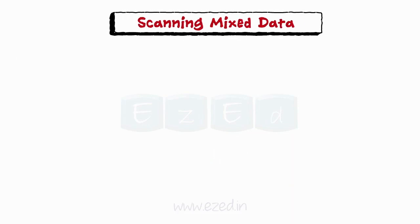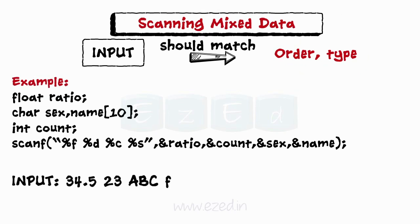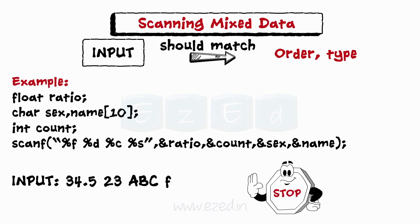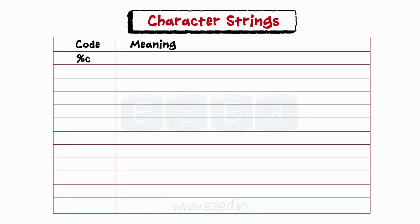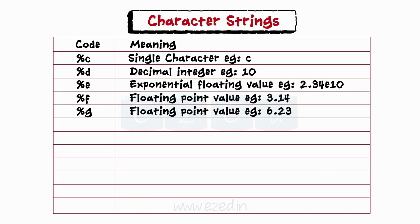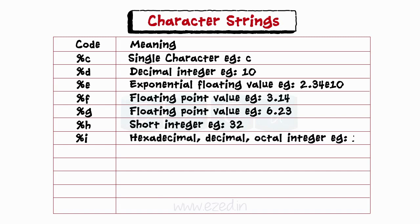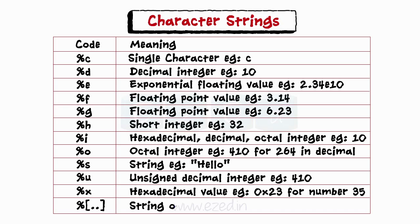We can scan input data of different types in just one scanf statement. In this case, we should exercise care to ensure that the input data items match in order and type with the control specification. If we attempt to read an input that does not match the type expected, then scanf won't read any further and will return the already read values. Let's go through the commonly used scanf format codes: %c reads a character, %d reads an integer, %e reads an exponential value, %f and %g read a floating point value, %h reads a short integer, %i reads hexadecimal, decimal, and octal integers, %o reads an octal integer, %s reads a string, %u reads an unsigned decimal integer, %x reads a hexadecimal value, and %[chars] reads a string of characters.